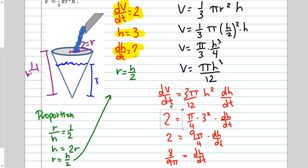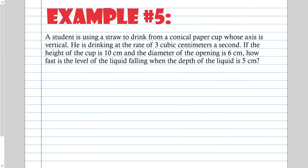To get rid of r, I used the proportional relationship between the cone's radius and height. The cone's radius is 2 and height is 4, so they gave me the information to set up the proportion. I wrote r over h equals the given values, cross multiplied, and solved for whichever variable needed to be eliminated.